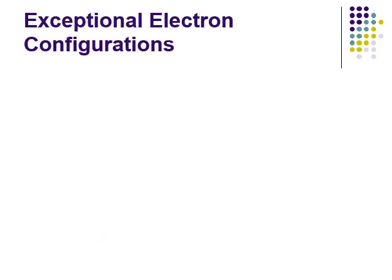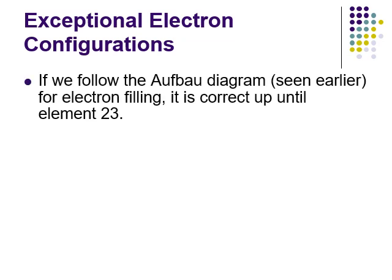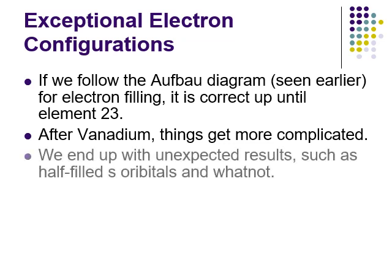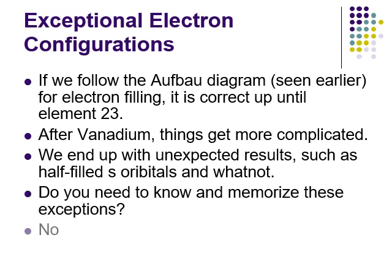Transition metals are weird — they break the rules with unusual electron configurations, often involving half-filled sublevels or skipped arrangements. You don't need to worry about those specifics; just be aware that transition metals have weird configurations.